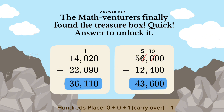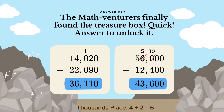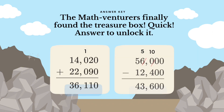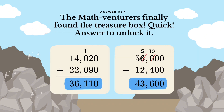Hundreds place: 0 plus 0 plus 1 carry over equals 1. Thousands place: 4 plus 2 is equal to 6. Ten thousands place: 1 plus 2 is equal to 3. Final answer: 14,020 plus 22,090 equals 36,110.